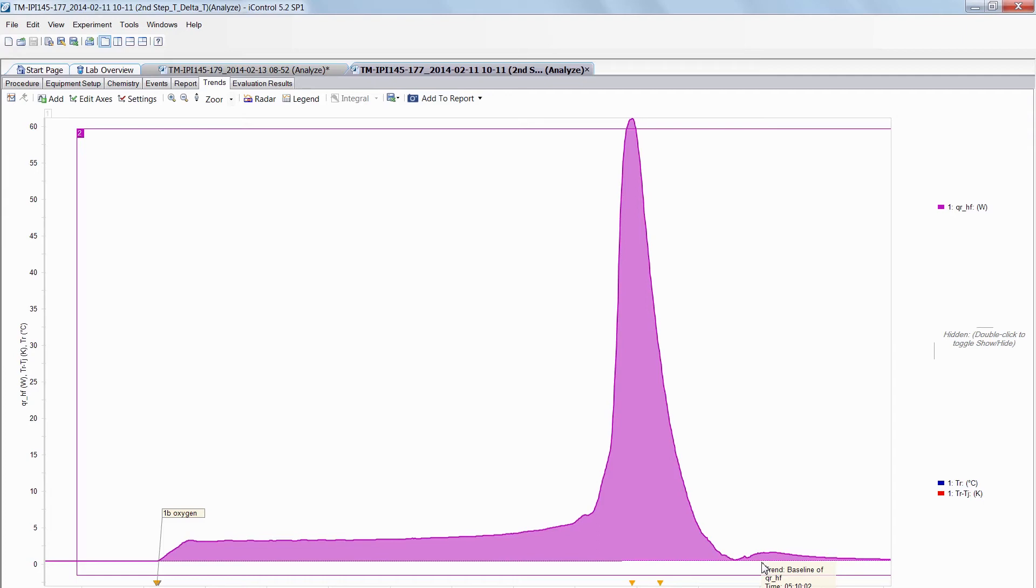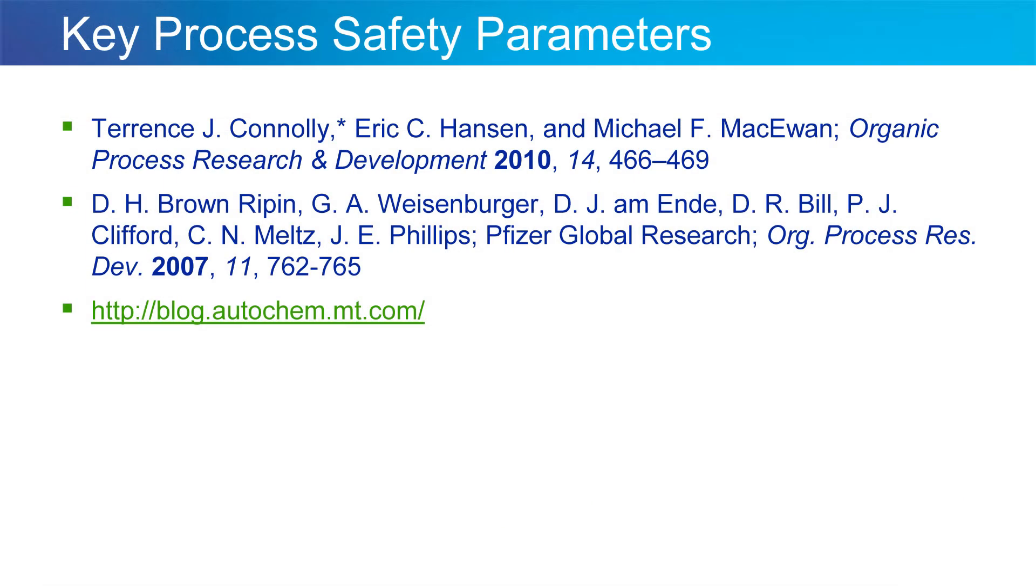I hope you found that example useful, and to conclude I'd like to give you a couple of references. One from 2010 where you're going to find some use of EasyMax for early on heat screening. Second example is with the RC1 for process safety evaluation, how it is typically used. I'm giving you a web link to the page where you're going to find more information about calorimetry in general but also information about EasyMax, OptiMax, and the RC1, and finally the link to the AutoChem blog. Thank you!